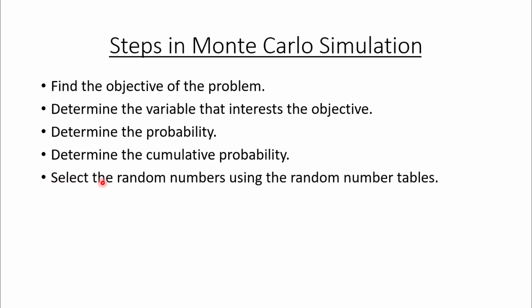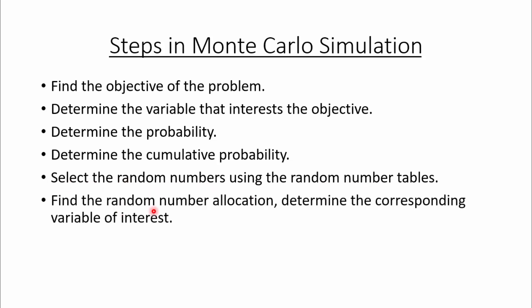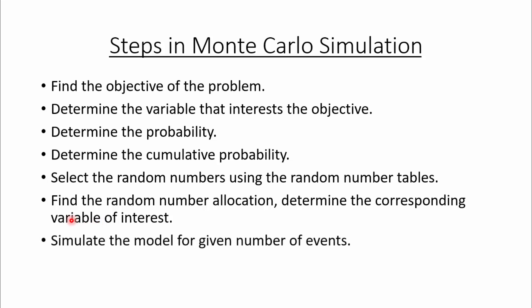Usually in Monte Carlo simulation the random numbers are already given in the problem, and if they are not given then we need to select them using the random number tables. Then we need to find the random number allocation using the random number interval. The random number interval helps to determine the corresponding variable — that means it helps us find out the value of the variable selected earlier. After that we need to simulate the model for the given number of events.